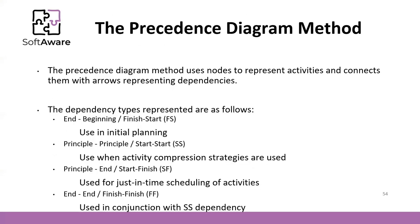The Precedence Diagram Method uses nodes to represent activities and connects them with arrows representing dependencies. The Activity on Arrow method uses arrows to define activities. Here, in the Precedence Diagram, we use the nodes to represent the activities.